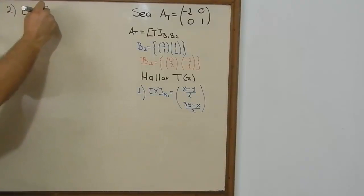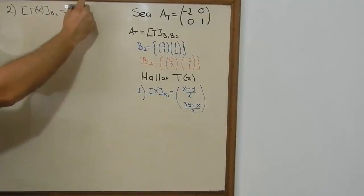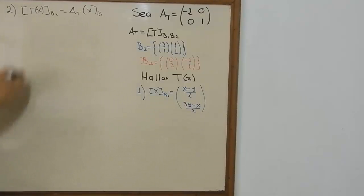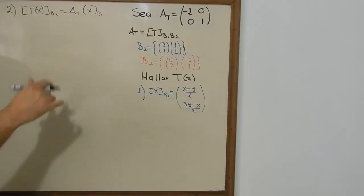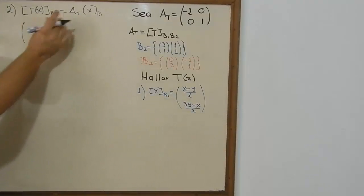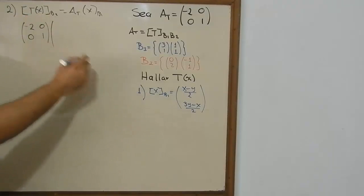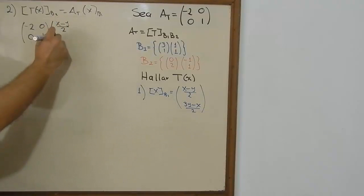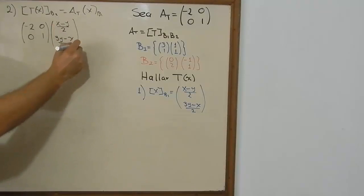For the second step, we need to find the transformation on base 2. For this, we multiply the transformation matrix by the vector we just found — the values for a and b. So we compute the matrix [−2, 0; 0, 1] times the vector [(x − y)/2; (3y − x)/2].